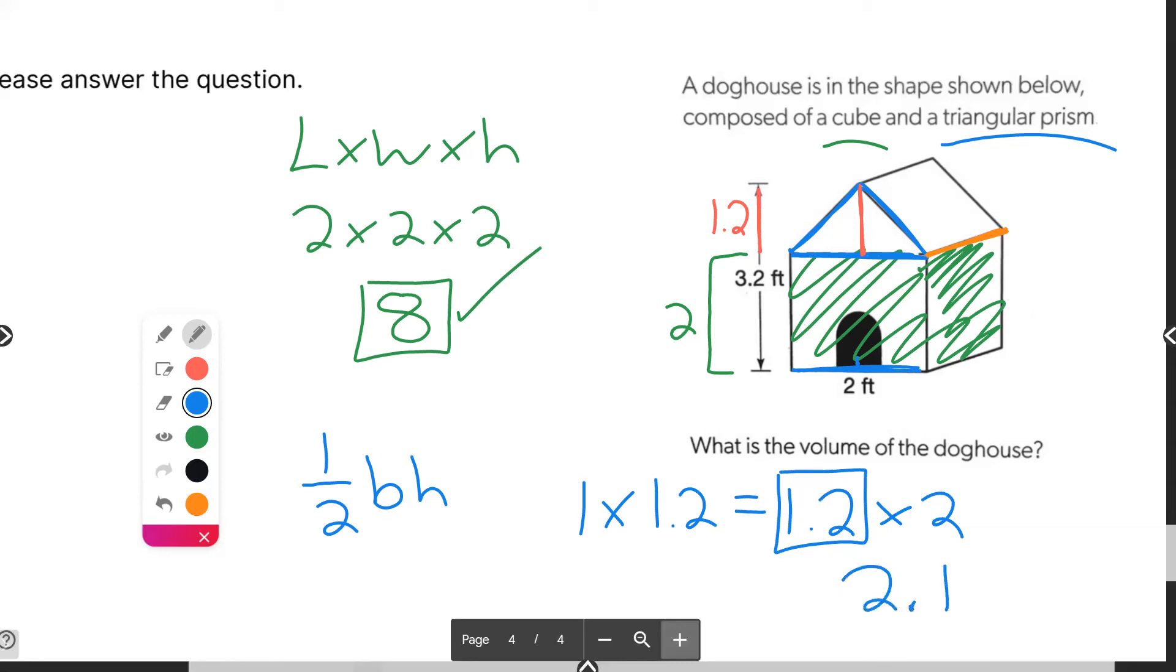Some of you might have looked at it and said, oh, wait a second. Isn't this kind of like finding the volume of a rectangular prism, length times width times height, but since it's only half of one, we're dividing it by 2? And that answer is absolutely positively yes.